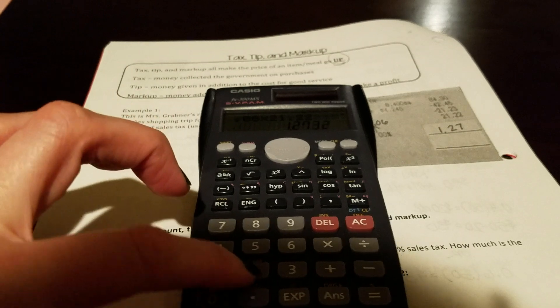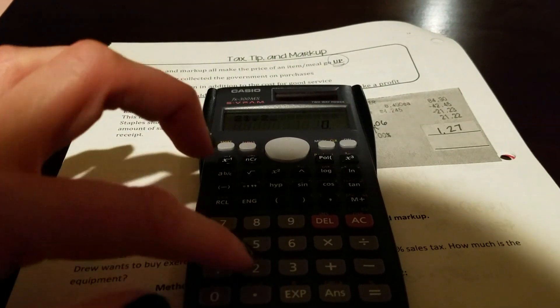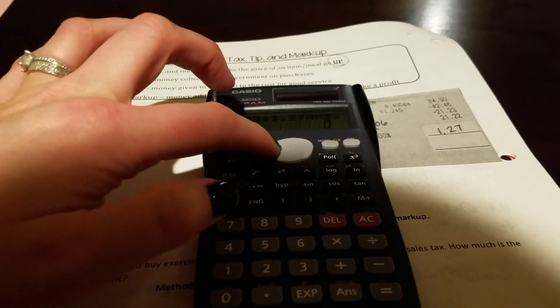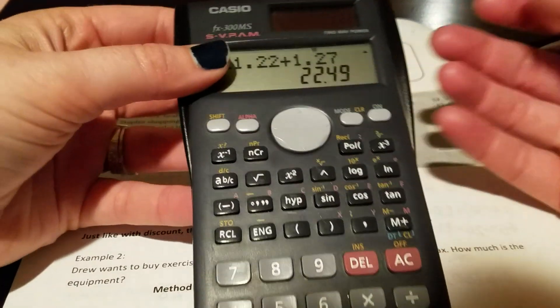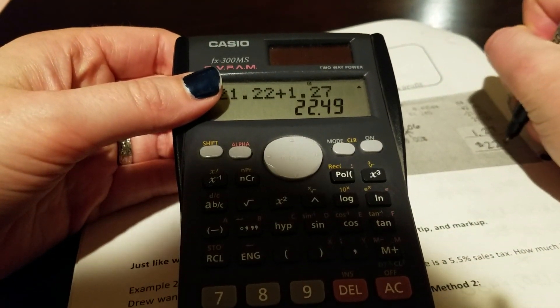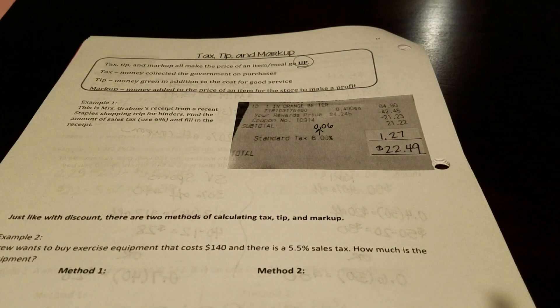So then what we do is we take our $21.22 and we add on our $1.27 for our sales tax. And we do get a total of $22.49 then for our final total when I went to check out.